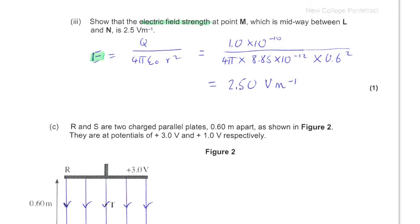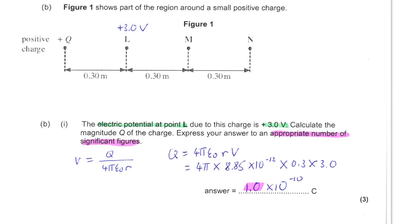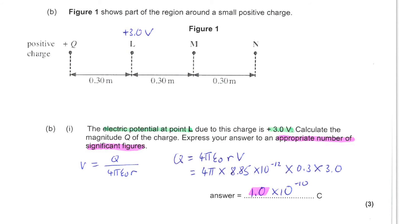Next, you are asked to show that the electric field strength at point M, which is midway between L and N, is 2.5 volts per meter. So a quick glance at the diagram looking at point M shows that it is a distance of 0.6 meters from Q.